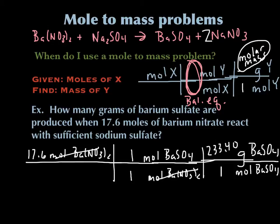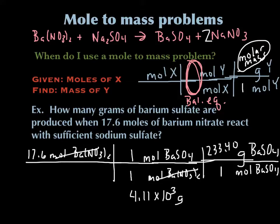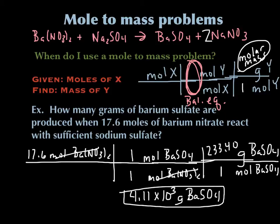I get the molar mass of BaSO4 from the periodic table, and sometimes that's the easiest thing to get mixed up. One mole, because it's molar mass — grams per mole. I've got 233.40 grams for the molar mass and I've calculated that in. I found that this is 4,107.84, but I need only 3 sig figs. These are exact quantities; 17.6 is 3 sig figs. So I'm going to put that in 3 sig figs: 4.11 times 10 to the 3rd grams of BaSO4. Remember where these numbers came from — the mole ratio is from the balanced chemical equation, and the molar mass is from the periodic table.